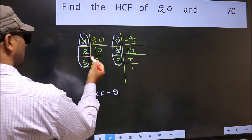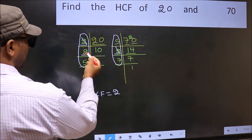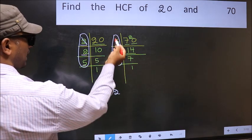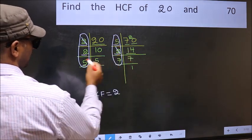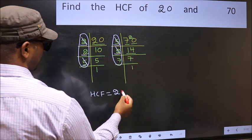Next number 2. Do we have 2 here? No. Next number 5. Do we have 5 here? Yes. So cut 5 right here.